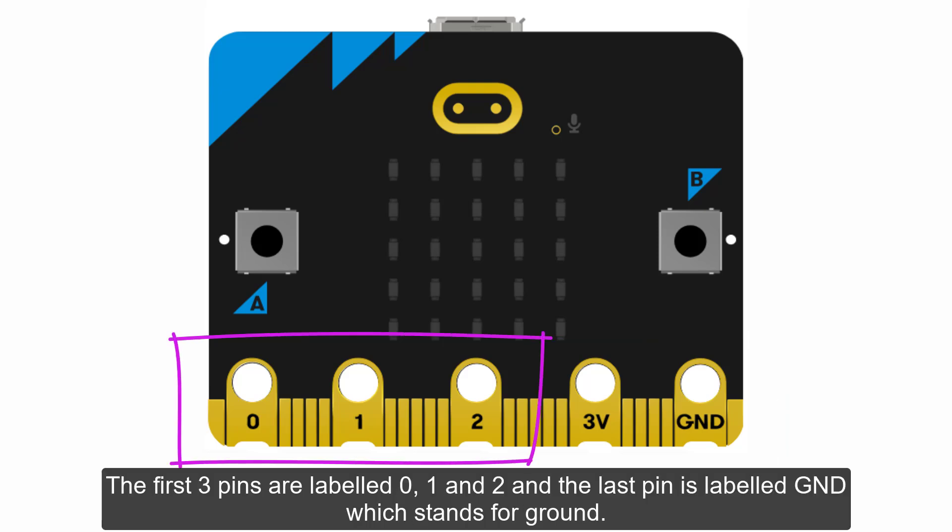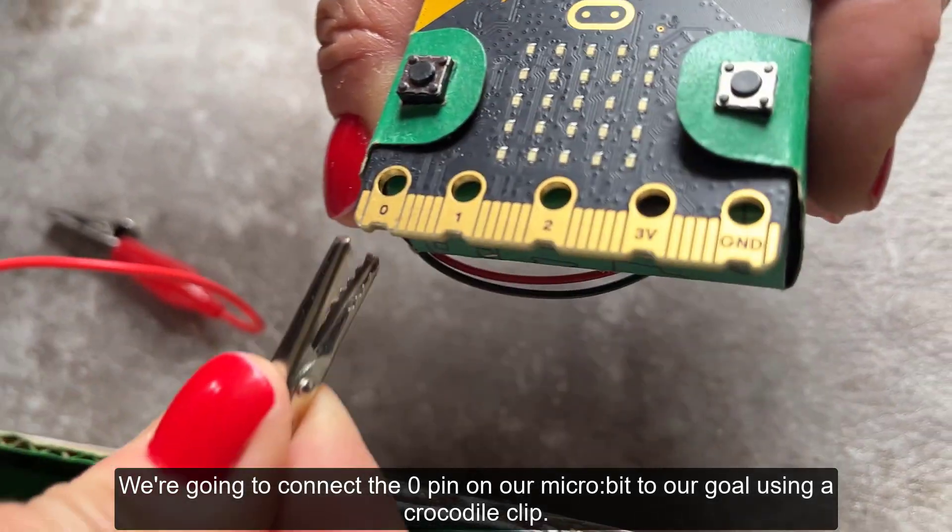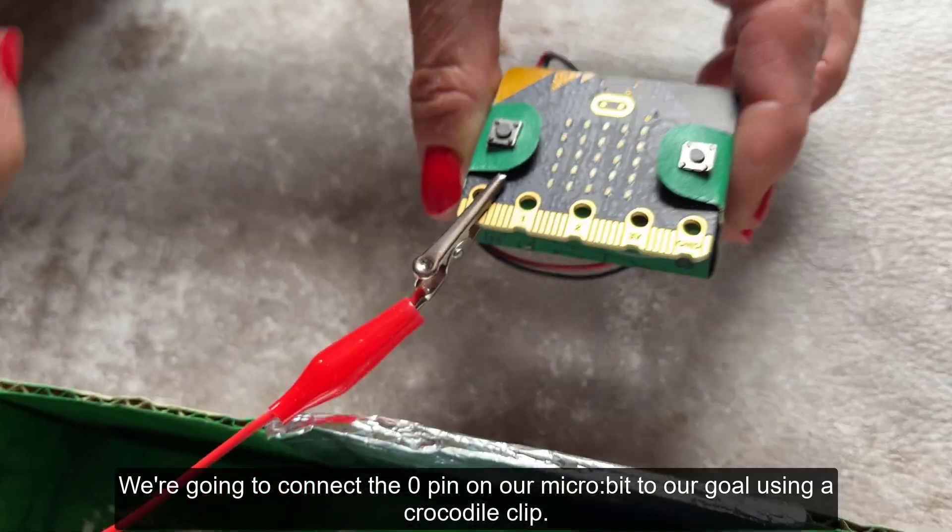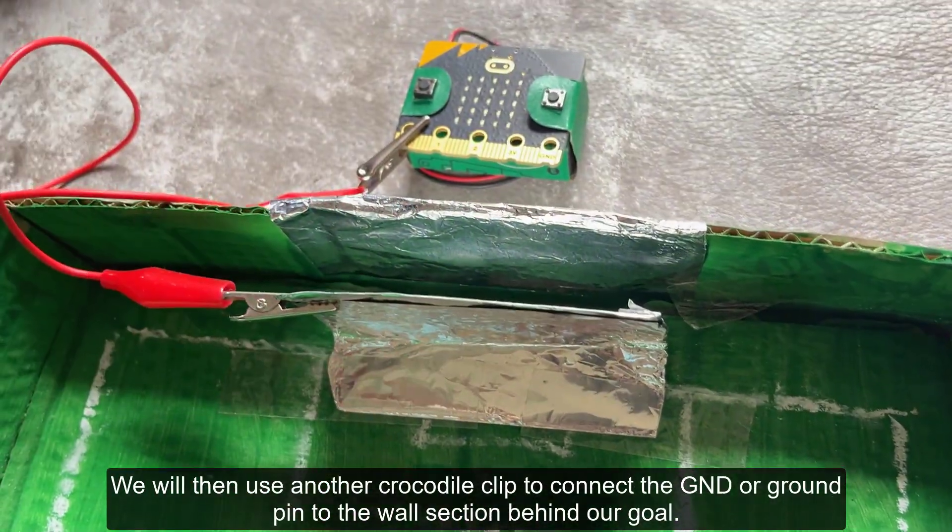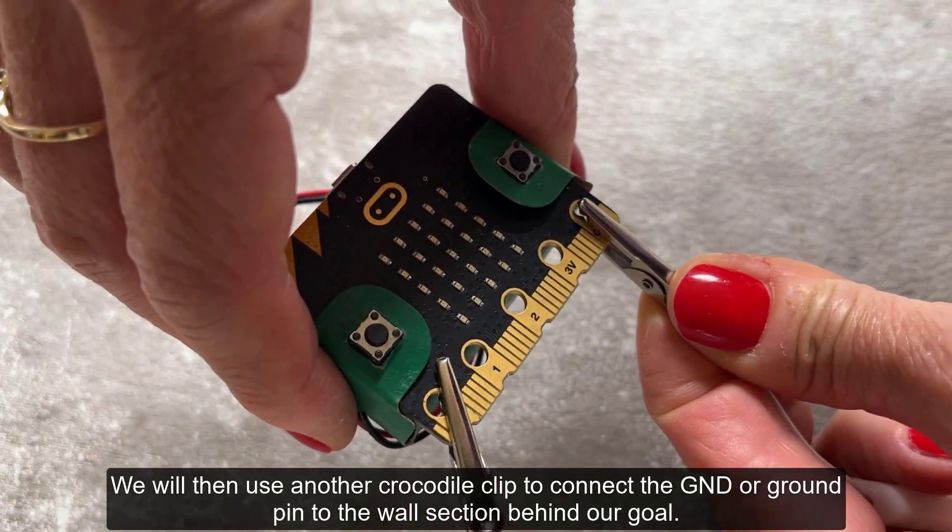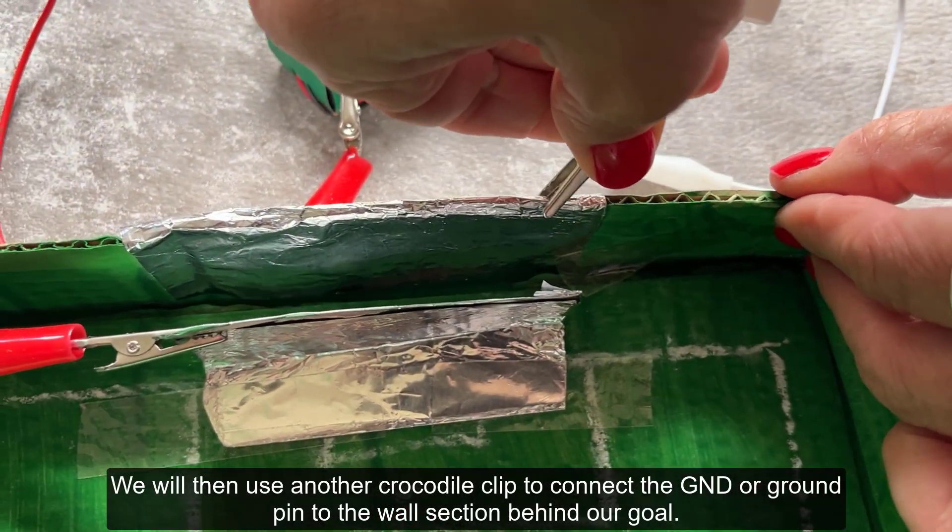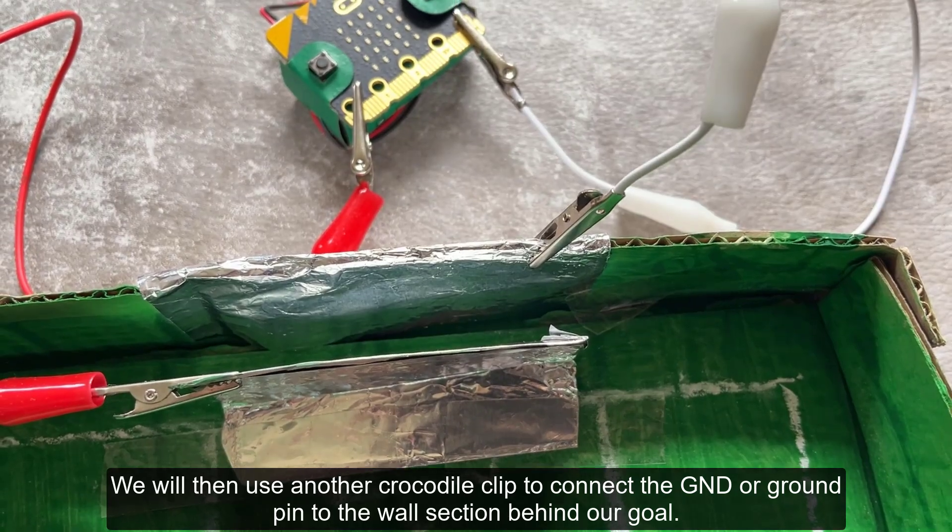Along the bottom edge of the microbit you will see five small holes. These are called pins and can be used to create electrical circuits and physically connect your microbit to external things. The first three pins are labelled 0, 1 and 2 and the last pin is labelled GND which stands for ground. We are going to connect the zero pin on our microbit to our goal using a crocodile clip. We will then use another crocodile clip to connect the GND or ground pin to the wall section behind our goal.